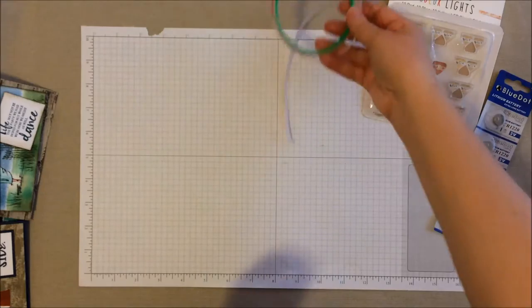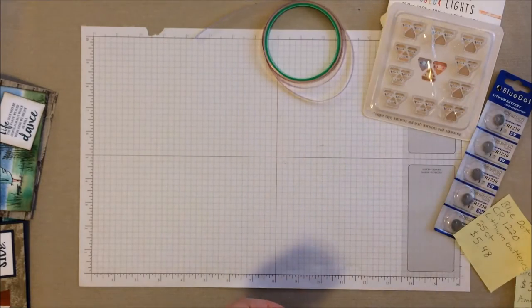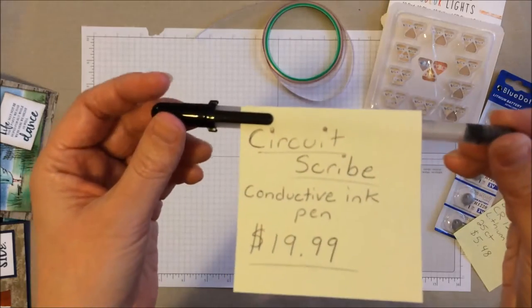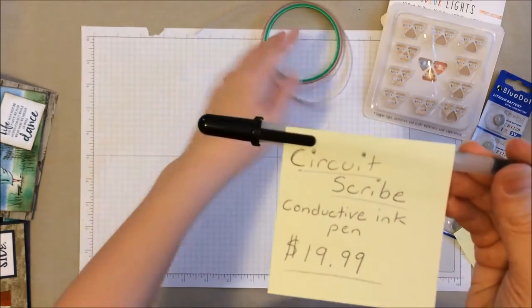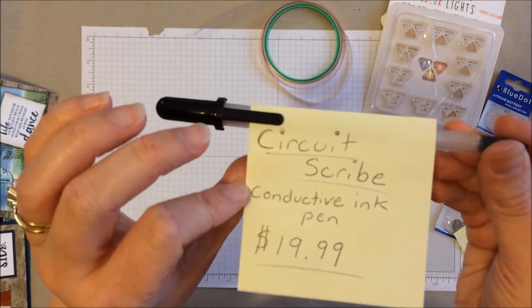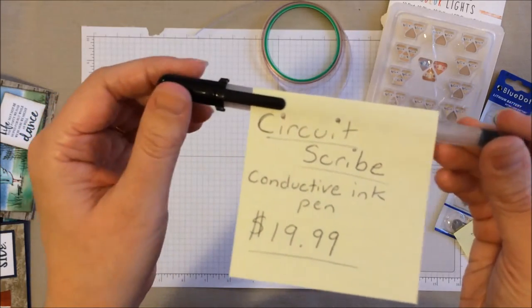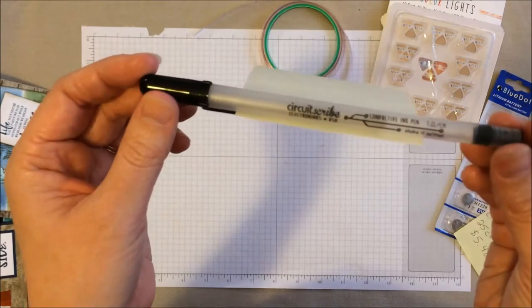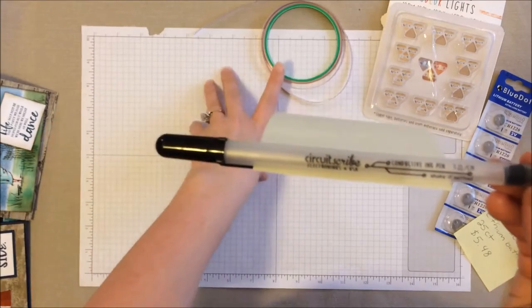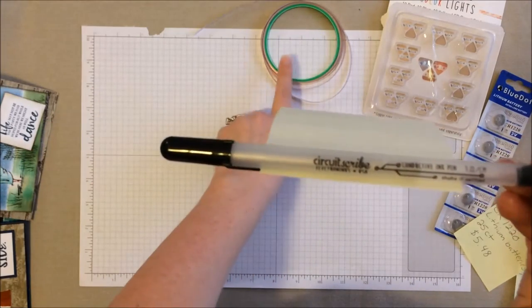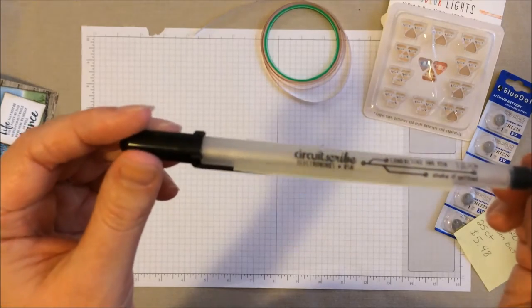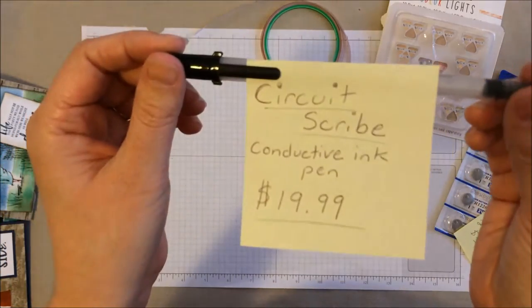But the last thing that, and of course the one that I am super excited about that it exists is this conductive ink pen. Now this is what I use in my videos instead of the copper tape. Now this is made by a company called circuit scribe and it's about 20 bucks and it is like a fancy gel pen. And that conductive ink just moves the current along to make the LED lights up instead of the copper. So this is a fabulous, fabulous product that I absolutely am in love with.